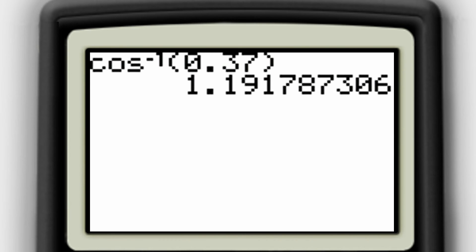Next you'll want to press the shift button or the second button and cosine. That's how I obtain the cosine inverse function. Then I'll enter 0.37 and press enter, and the answer we have is 1.19 radians.